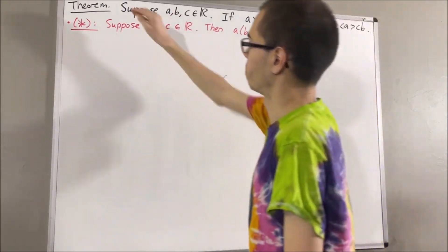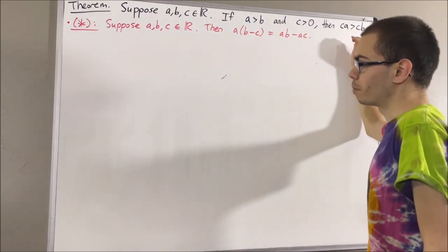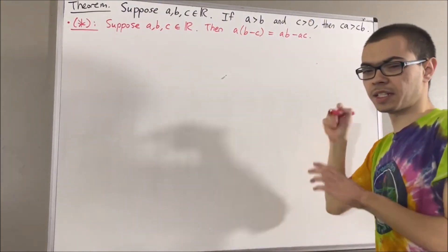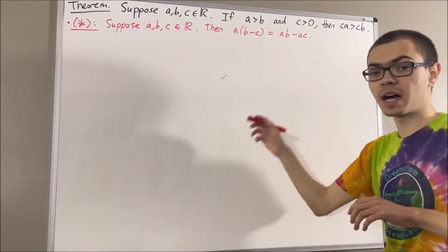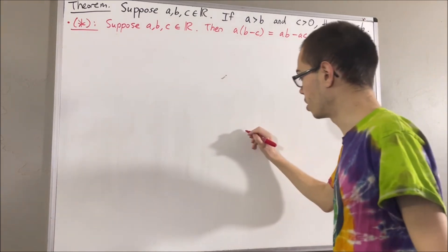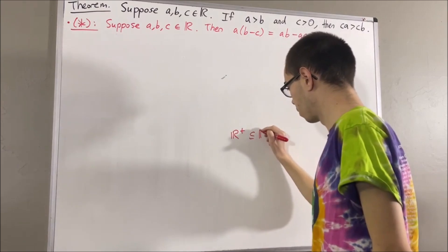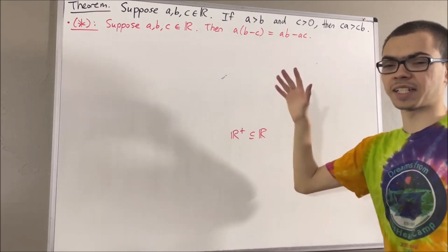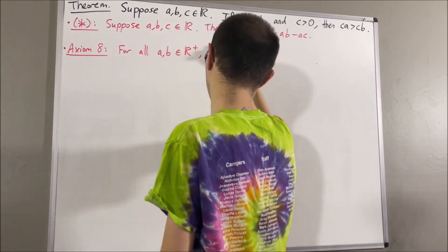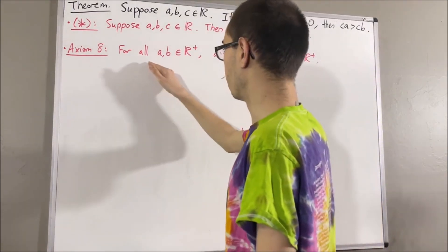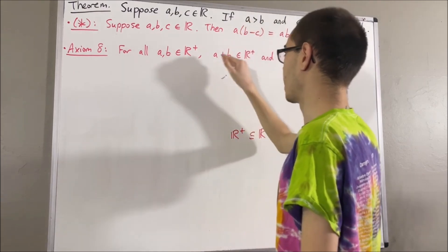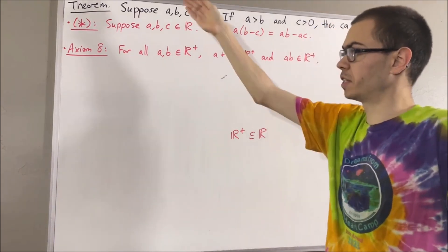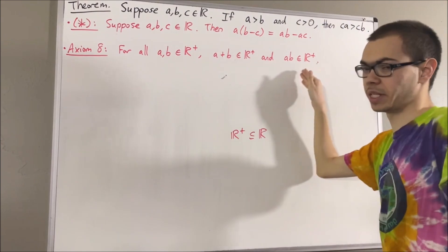And now our next goal is to prove this theorem. But before we get into proving this theorem, let's get a little bit more context. Our real number system is equipped with a subset which we call the set of positive real numbers, denoted R plus. One of the axioms associated with the set of positive real numbers is axiom 8, which says: for all positive real numbers A and B, A plus B and A times B are also positive real numbers. In proving this theorem, we're only going to need to use the fact that A times B is a positive real number.